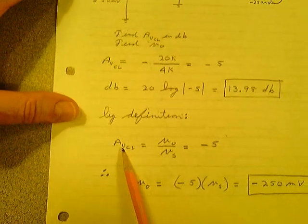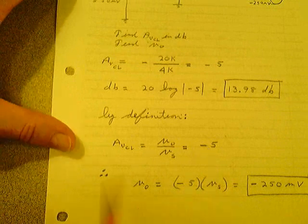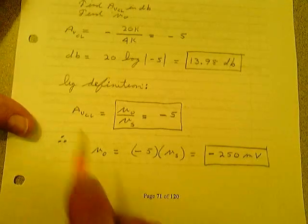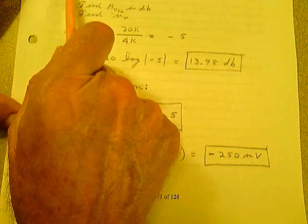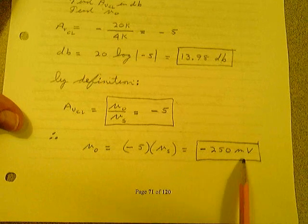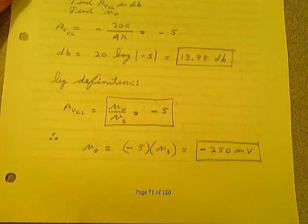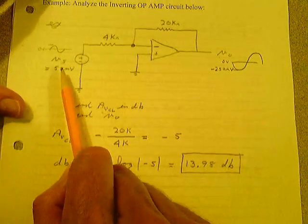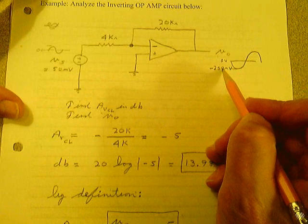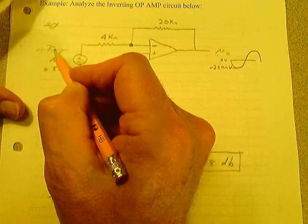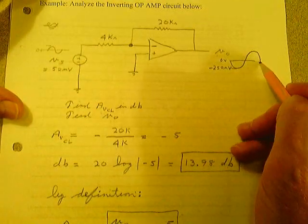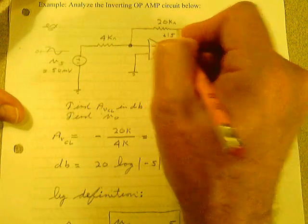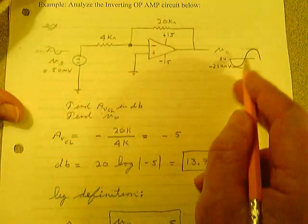By definition, the closed-loop gain Vout over Vs equals minus 5. So with 50 millivolts in, Vout is minus 5 times 50 millivolts, which is negative 250 millivolts. As the input goes to plus 50 millivolts, the output goes to minus 250 millivolts. As the input goes to negative 50 millivolts, the output goes to positive 250 millivolts — 180 degrees out of phase. Those millivolts are nowhere near the rails of, say, plus and minus 15 volts, so no saturation occurs.